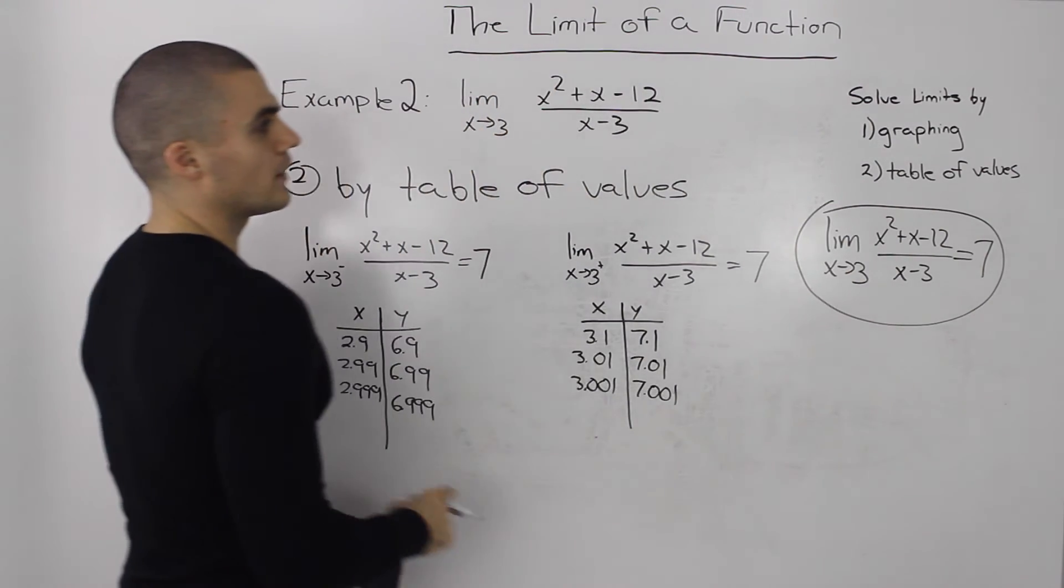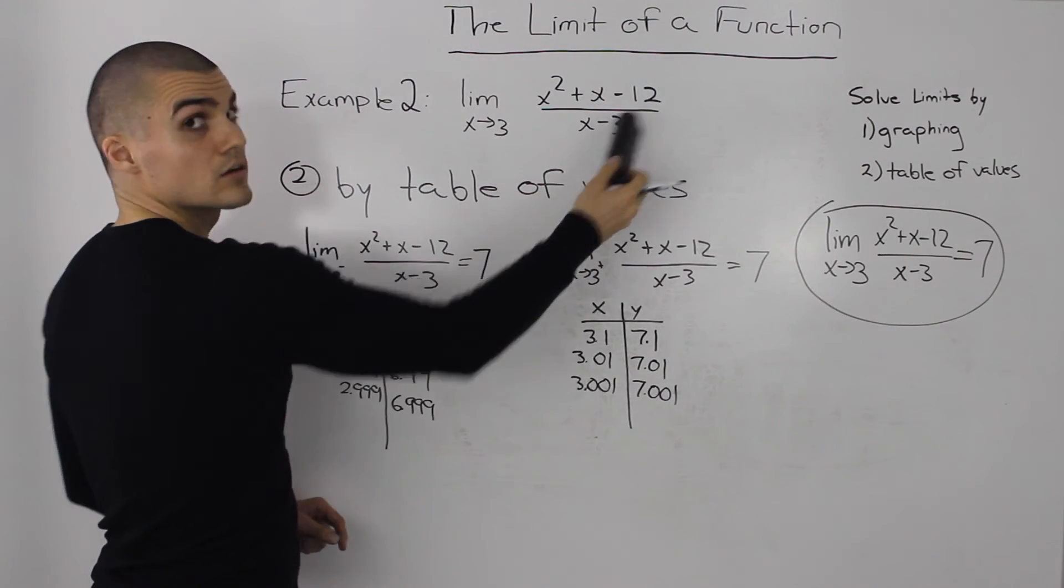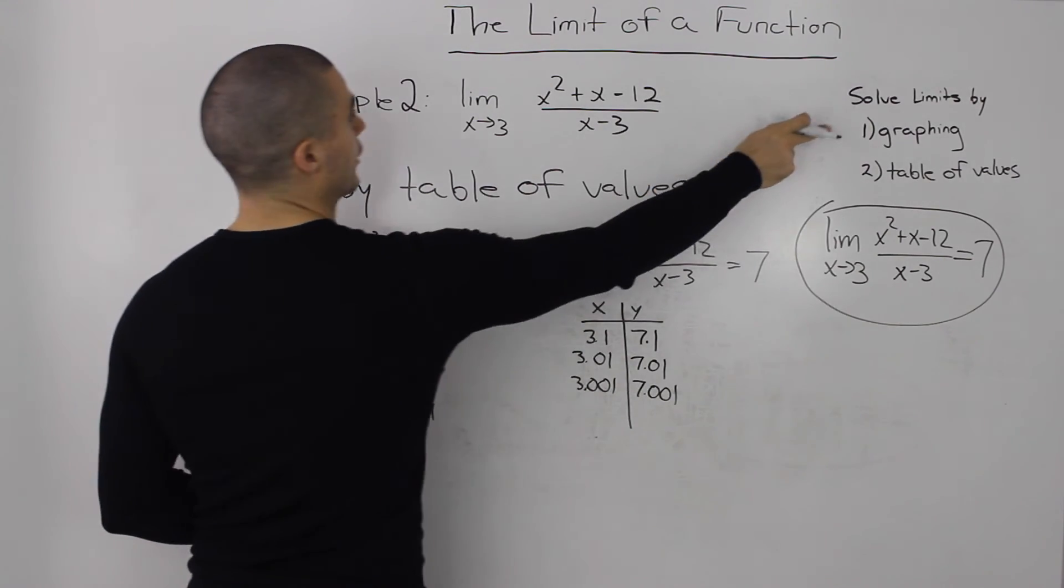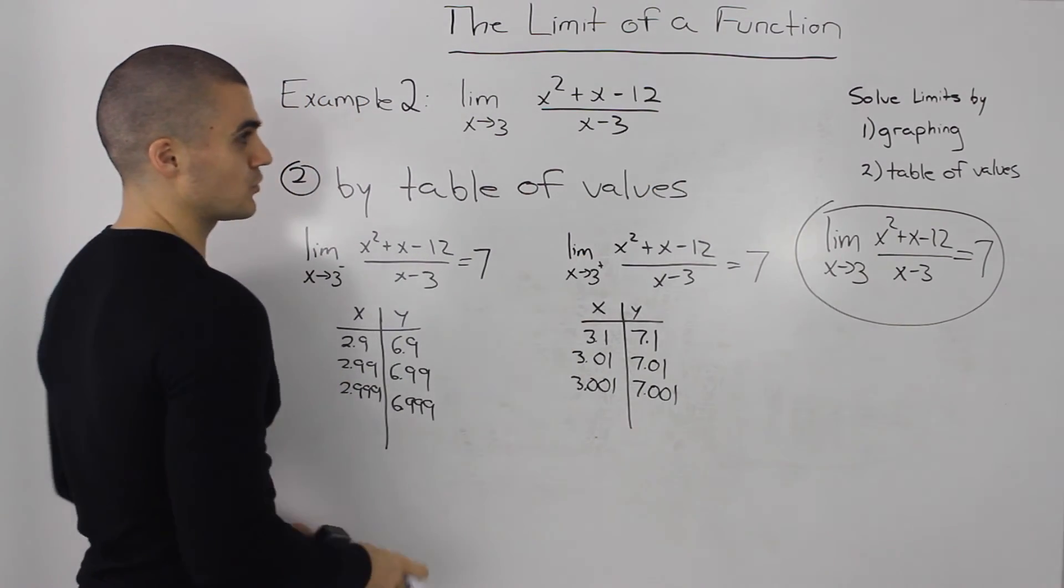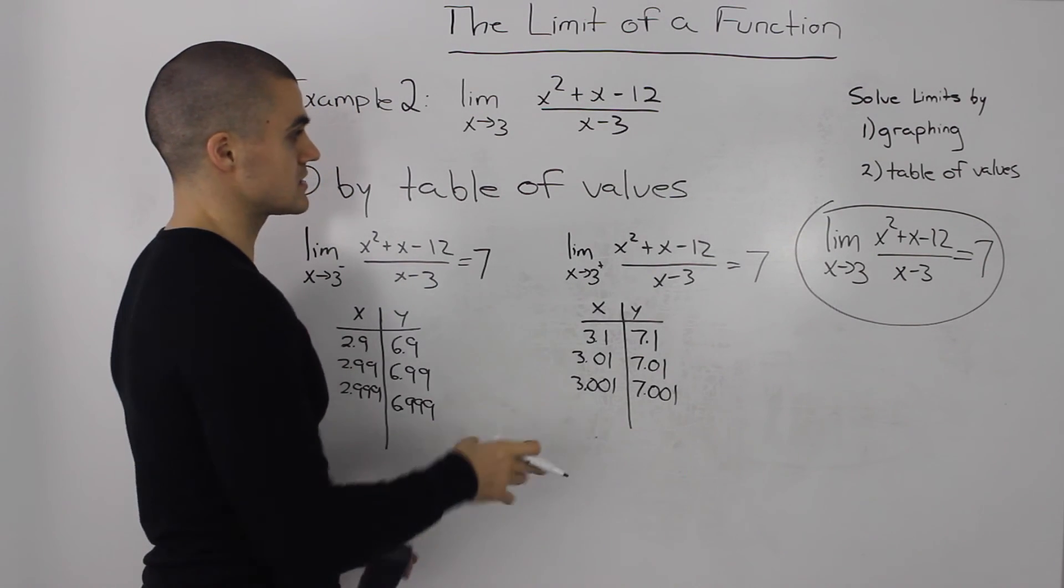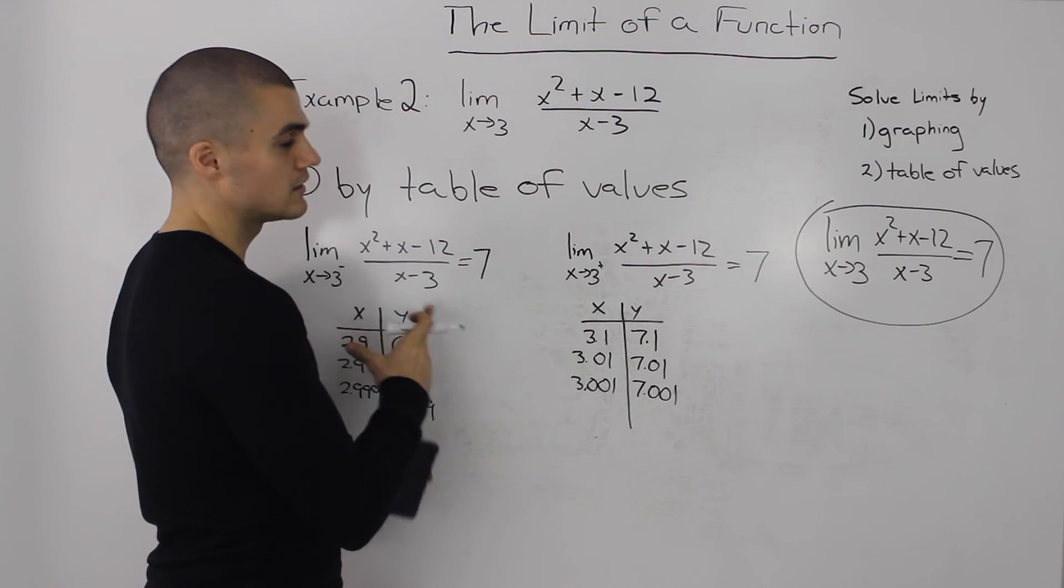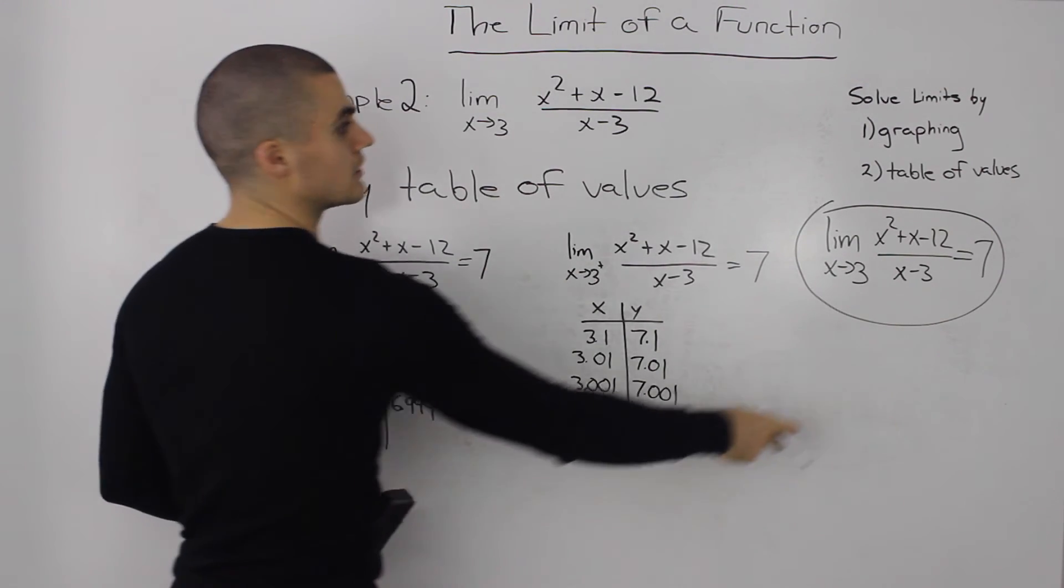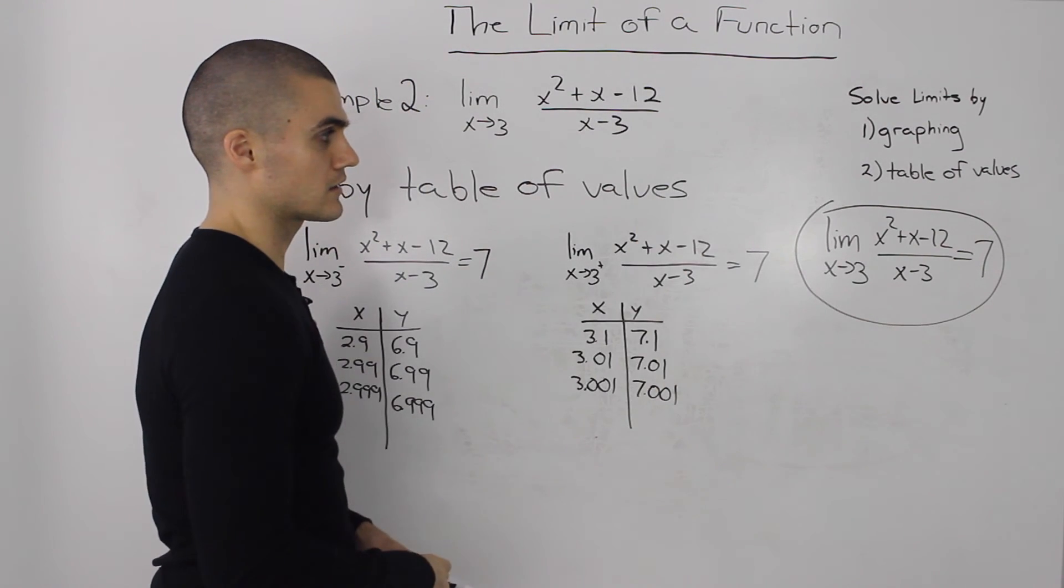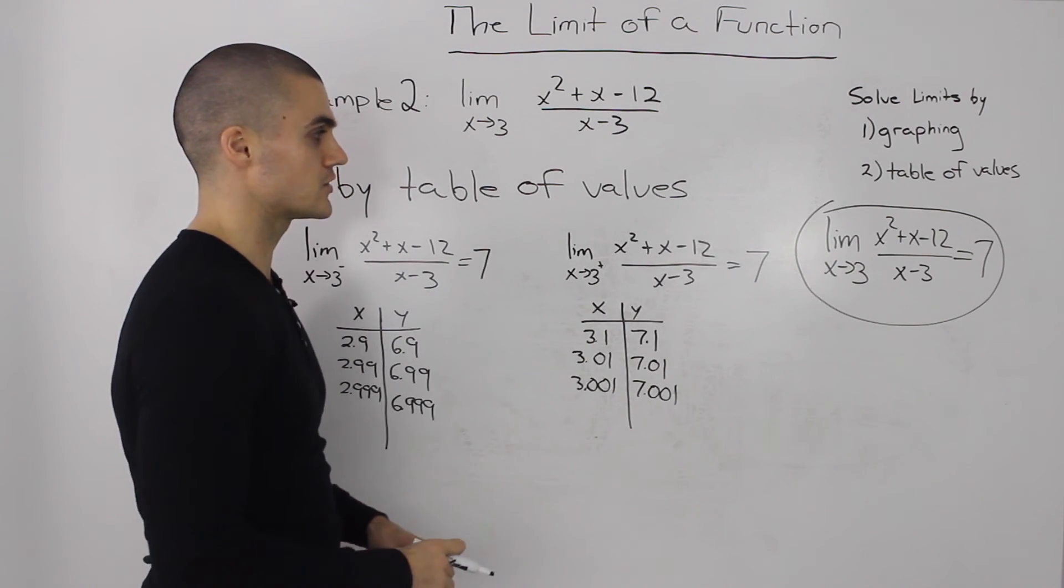We took this limit question and solved it in two different ways. In the previous example, we did it by graphing. In this example, we did it by table of values. Either way, the process is to find the one-sided limits from each side first. If they equal the same thing, then the general limit exists and equals that value. Thank you.